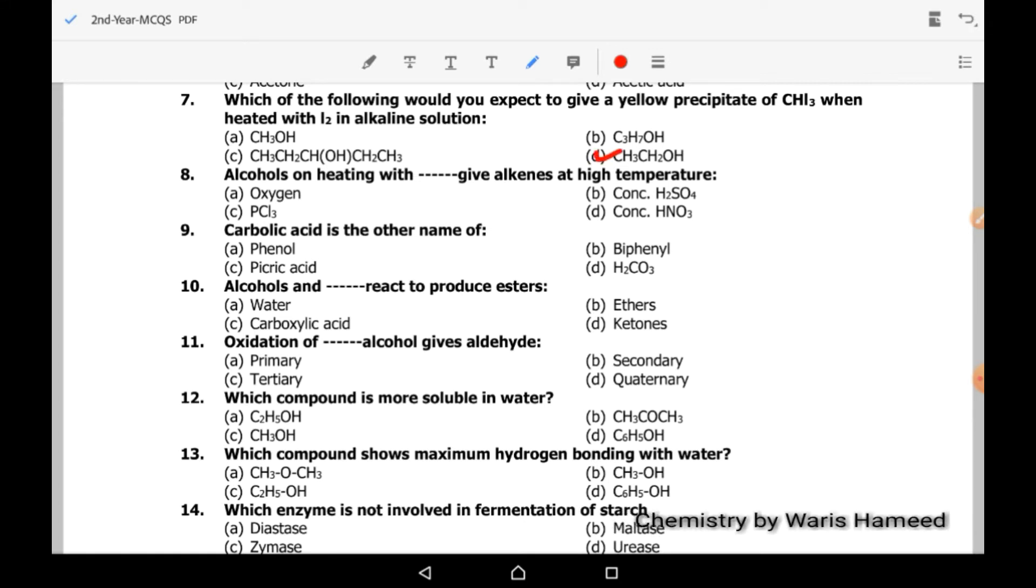Methanol does not show iodoform test and ethanol shows iodoform test. So option D is correct. Ethanol will show iodoform test, yellow precipitate of CHI3. MCQ 8: alcohols on heating with concentrated sulfuric acid give alkene at high temperature. Carbolic acid is the other name of phenol.